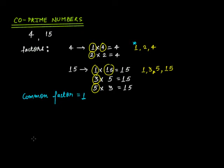So whenever you have 2 numbers and if the common factor of those 2 numbers is only 1, then those 2 numbers are called co-prime numbers. I'll repeat again, if you have 2 numbers and the common factor between those 2 numbers is just the number 1, then those 2 numbers are co-prime numbers.